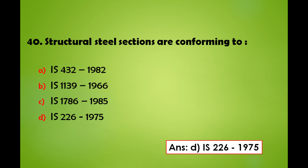Structural steel sections are conforming to: a) IS 432-1982, b) IS 1139-1966, c) IS 1786-1985, d) IS 226-1975. The answer is: structural steel sections are conforming to IS 226-1975.